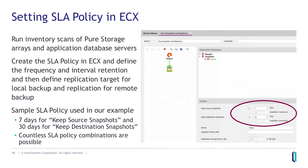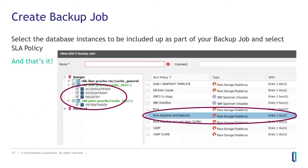In ECX, we ran the inventory scan, cataloged the flash arrays and database servers, then created a simple SLA policy by defining the frequency, interval of retention, and replication target. In my example, I set up an SLA policy for seven days to keep source snapshots and 30 days for destination snapshots — these are the defaults, but you can configure it any way you want. The ECX UI is very intuitive and easy to use — there's no drama there.